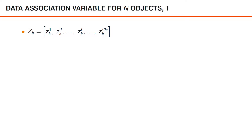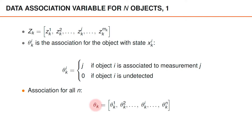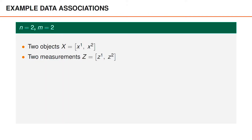Let's begin with the data association variable. We have the measurement Z, and the individual measurements are indexed by j, ranging from 1 to m_k. The data association for the object with state X_i at time k is denoted Theta_i at time k. This is defined just like in single-object tracking: Theta_i equals j if object i is associated to measurement j, and Theta_i equals 0 if an object is undetected. The n-object association Theta_k is then defined as a vector consisting of the associations Theta_1, Theta_2, and so on until Theta_n.